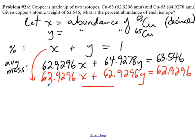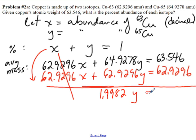It's called elimination because if we now subtract these two equations, the first term in each will be eliminated since they're equal. We have 64.9278 take away 62.9296, so I have 1.9982 y's. On the right-hand side, 63.546 take away 62.9296. I'm going to round off to three decimal places because we're subtracting two numbers, and we get 0.616.